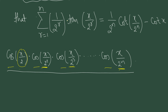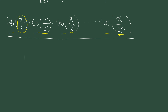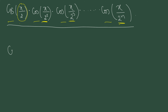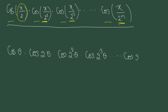So what formula comes to mind? This is from the chapter on trigonometric ratios and identities. There was a formula for the multiplication of cosines: cos θ · cos 2θ · cos 2²θ · cos 2³θ · ... · cos(2^(n−1) θ). The total number of terms multiplied is n, because the power of 2 goes from 0 to n−1, giving n terms.